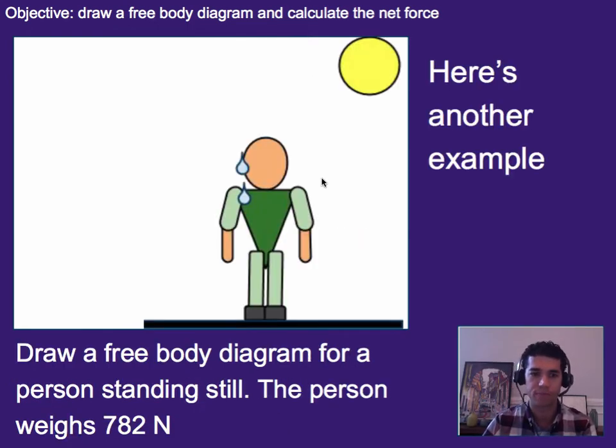So draw a free body diagram for a person standing still. A person weighs 782 newtons. So go ahead and pause the video and see if you can imagine what it would look like and or draw it on your paper on your own.